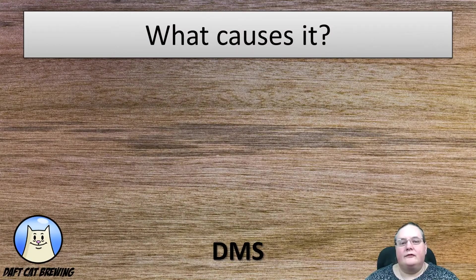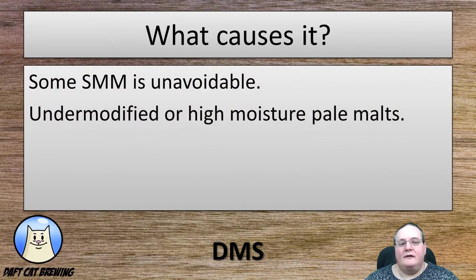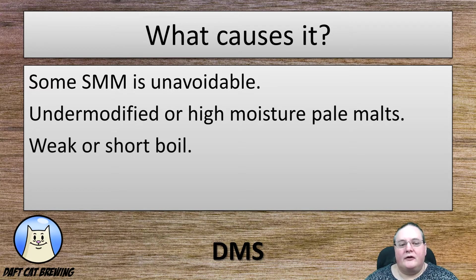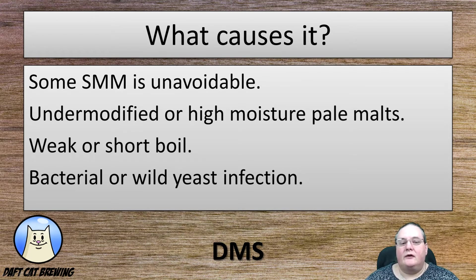What are the causes of DMS? SMM is unavoidable to some degree — it's part of the malting process, it's generated there. But undermodified or high-moisture pale malts will have more of it. A weak or short boil stops it being boiled off. And bacterial or wild yeast infection can also be a big cause of it in your beer.